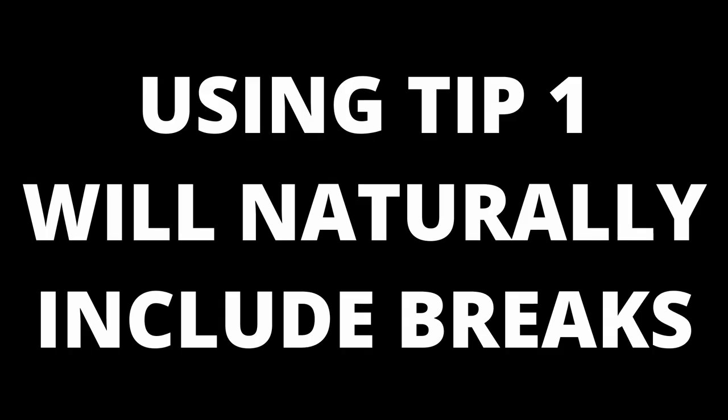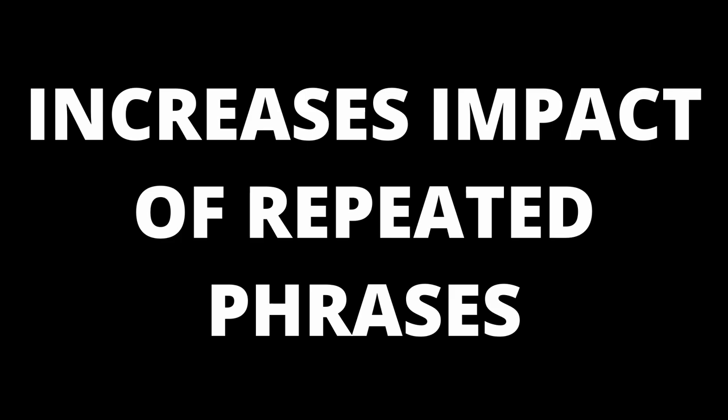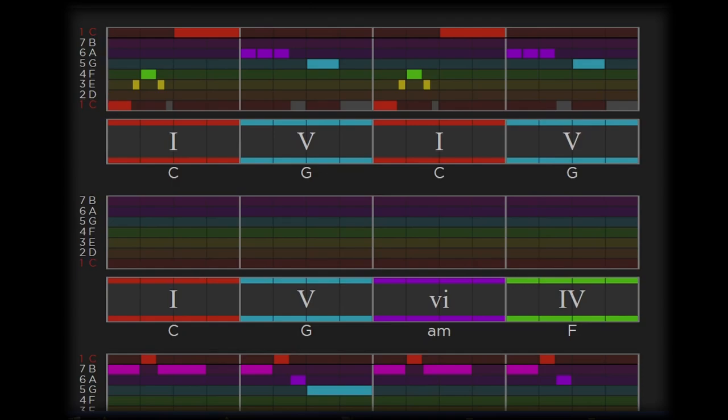Tip number four: it's good to have a break. Thinking back to tip number one and language — in particular written English — an important tool is the paragraph. It provides a break between text and signifies a change in point or idea. Songs can also benefit from breaks. Melody phrases can be separated by a few non-vocal instrumental bars, either to give the singer a breather or to take the song to a new place. If you're repeating phrases, they will benefit from coming back after a break. In our example, we'll repeat a phrase a couple of times, then have a four-bar break before bringing in a new phrase.